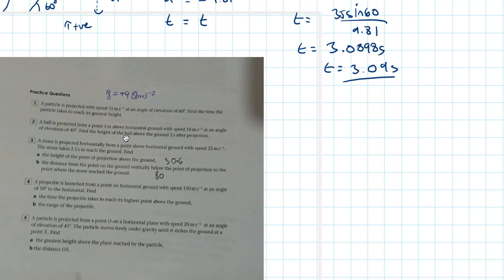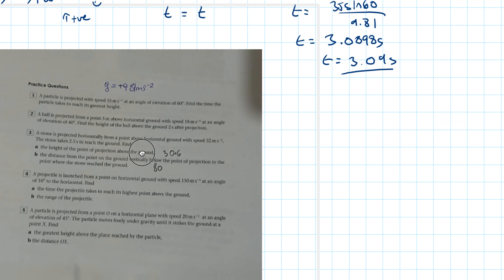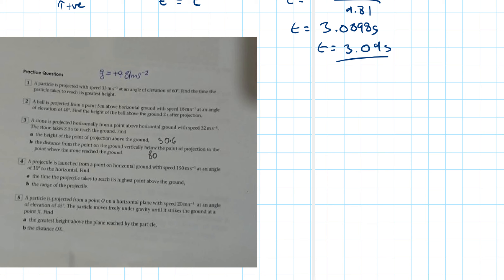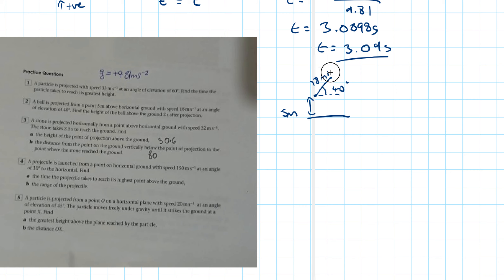Question two: a ball is projected from a point 5 metres above the horizontal ground with speed 18 metres per second at an angle of elevation of 40 degrees. Find the height of the ball above the ground 2 seconds after projection. Drawing it out is important — we start 5 metres above the ground at 18 metres per second at 40 degrees to the horizontal.